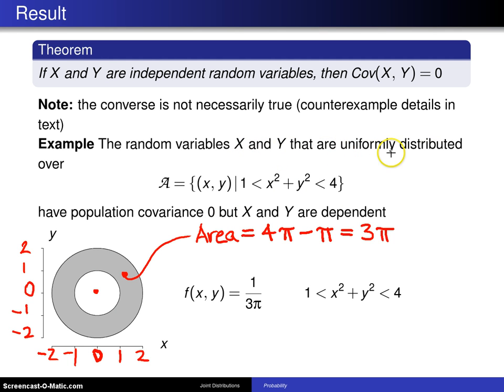Now, since they're uniformly distributed over that region, and we have to make the volume underneath the probability density function above the shaded region equal to 1, the joint probability density function has to be just the reciprocal of 3π, which is 1/(3π) over the donut shaped support region.